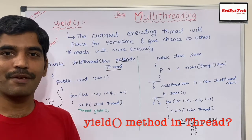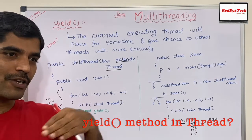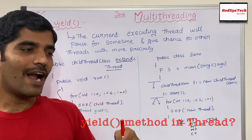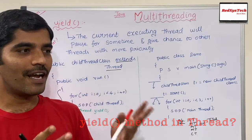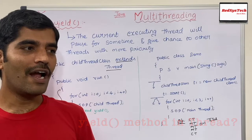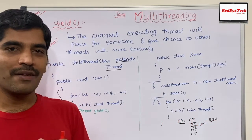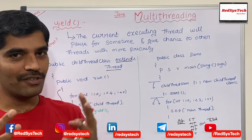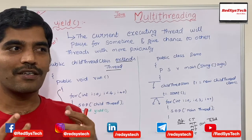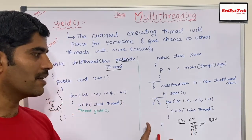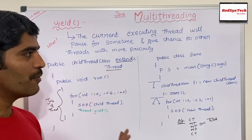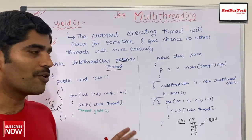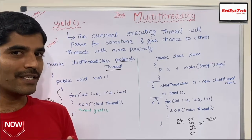If anyone asks about yield method, think about the grocery store example: someone standing before you in line talking to the cashier for a very long time, not giving others a chance. Yield means giving a chance to others. This is the simple way to correlate reality with the threading concept.